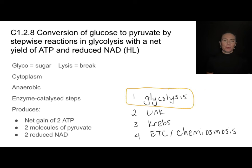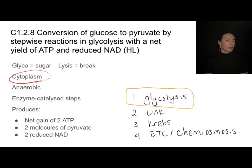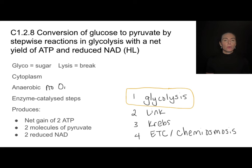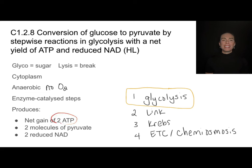Glycolysis is the very first step in the respiration process. Glyco means sugar, lysis means to break — so we're literally breaking apart a sugar. This occurs in the cytoplasm; we're not in the mitochondria yet, and it is anaerobic, meaning it does not require oxygen. It's going to happen with a series of enzyme-catalyzed steps. The net products at the end of glycolysis are two ATP, two molecules of pyruvate, and two molecules of reduced NAD.